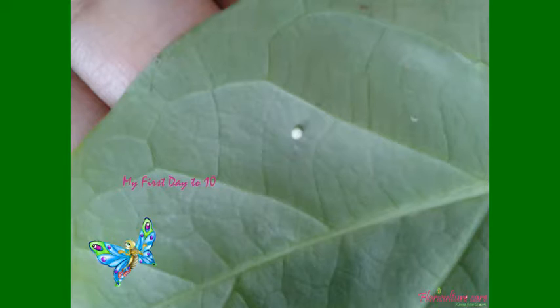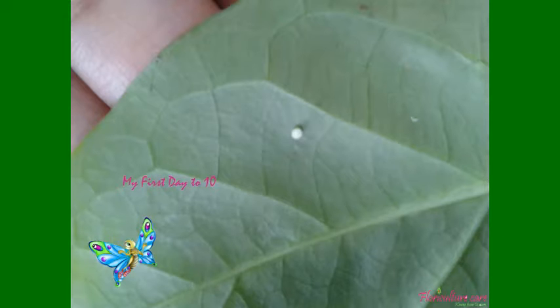The egg is the first stage of the butterfly's life cycle. A butterfly starts life as a very small, round, oval, or cylindrical egg. Most probably they lay eggs on the underside of leaves. Some eggs may be round, some oval, and some may be ribbed, while others may have other features. The egg shape depends on the type of butterfly that laid it. Normally, 10 days after laying, the larva comes out.